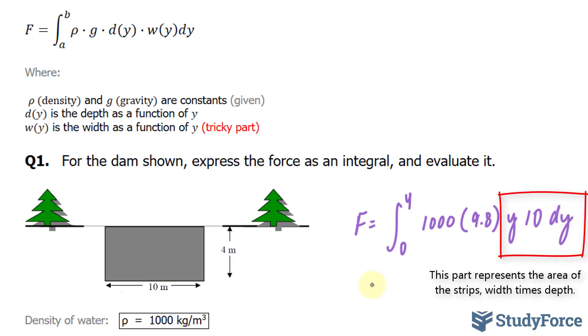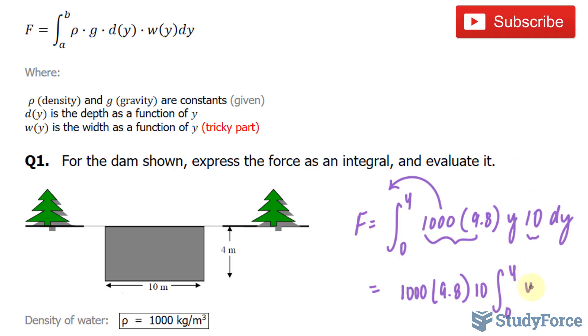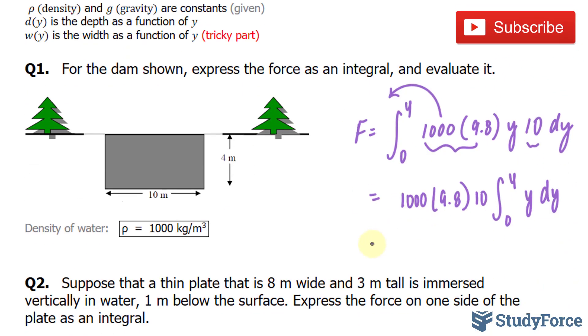Now we have to integrate. I'll pull out these three numbers and multiply them outside of the integral, where I end up with 1000 times 9.8 times 10 times the integral between 0 and 4, y dy. The integral of this function is quite simple. It's y to the power of 2 over 2, and we have to integrate this at 0 and 4.